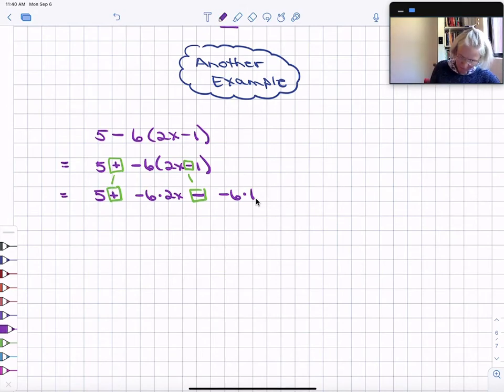Let's do our arithmetic. 5 plus negative 6 times 2 times x. Negative 6 times 2 is negative 12x minus negative 6 times 1 is negative 6.